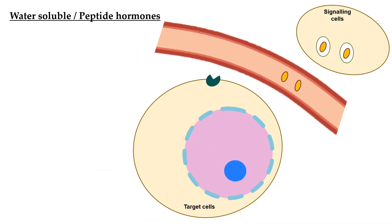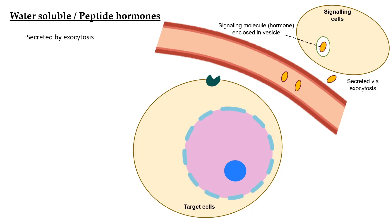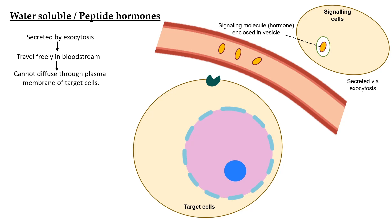Now let's look at water-soluble hormone or peptide hormone. In the signaling cell, this hormone is enclosed in a vesicle and secreted by exocytosis. Due to its solubility in plasma, this hormone can travel freely in the bloodstream to reach the target cell. However, once it reaches the target cell, it cannot simply diffuse through the plasma membrane.